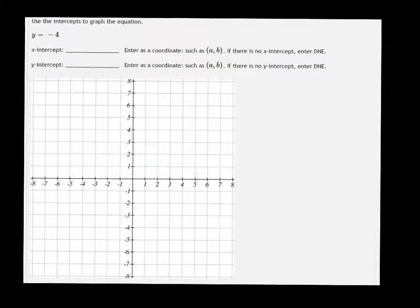So the equation of y equals negative 4, you don't really need the intercepts to graph it, it's just a horizontal line that's going to go through y equals negative 4.